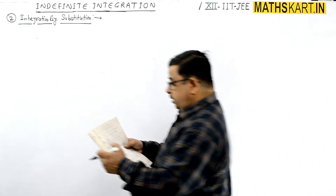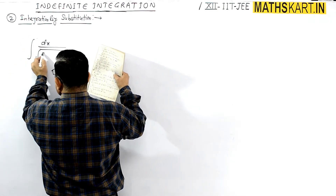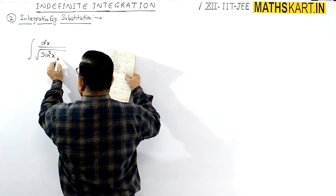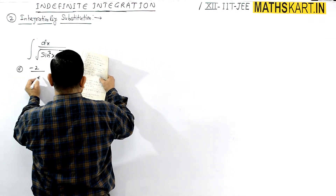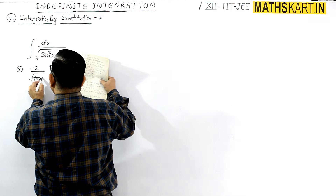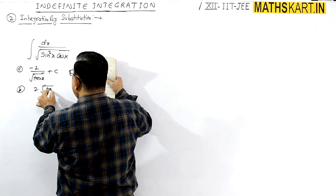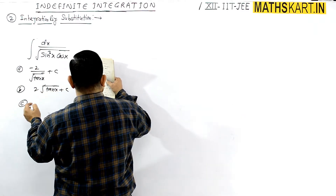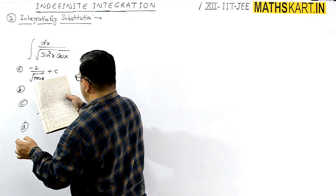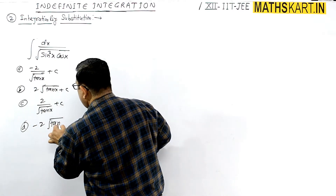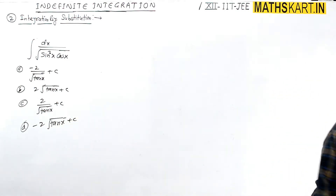Next question: integrate 1 upon (sin³x · cos x). Options: A is minus 2 upon root of tan x + C, B is 2 root of tan x + C, C is 2 by root of tan x + C, D is minus 2 root of tan x + C.